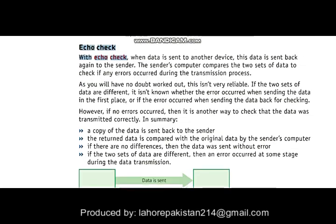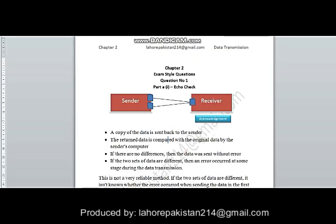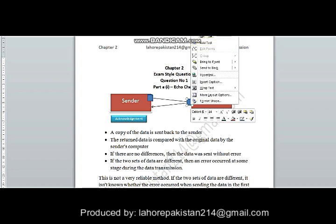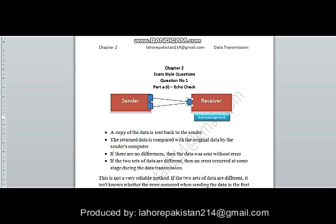I have taken these summary points of echo check from the topic. Let me explain the process: the sender sends a copy of data to the receiver. The receiver keeps a copy of the data and sends it back to the sender. Now the sender has two copies — its own sent copy and the one just received. The sender compares both copies together. If they are the same, the sender sends an acknowledgement to the receiver that the copy is fine.